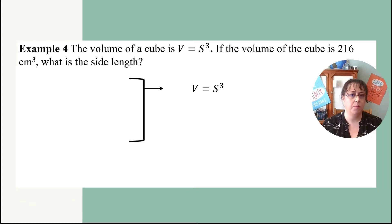Example 4, the volume of a cube is V equals S cubed or volume equals side length cubed. If the volume of a cube is 216 centimeters cubed, what is the side length? So here we have V equals S cubed, the formula we were given. So we're going to break this into what it is that we're going to solve. So I'm going to start off by listing out the variables and then trying to substitute in what we have.